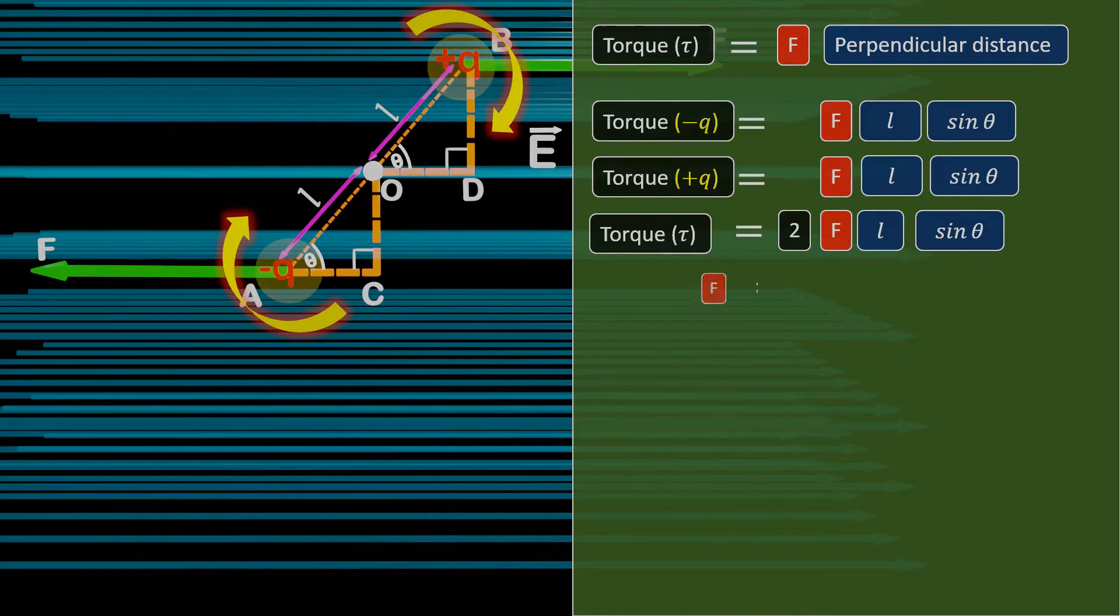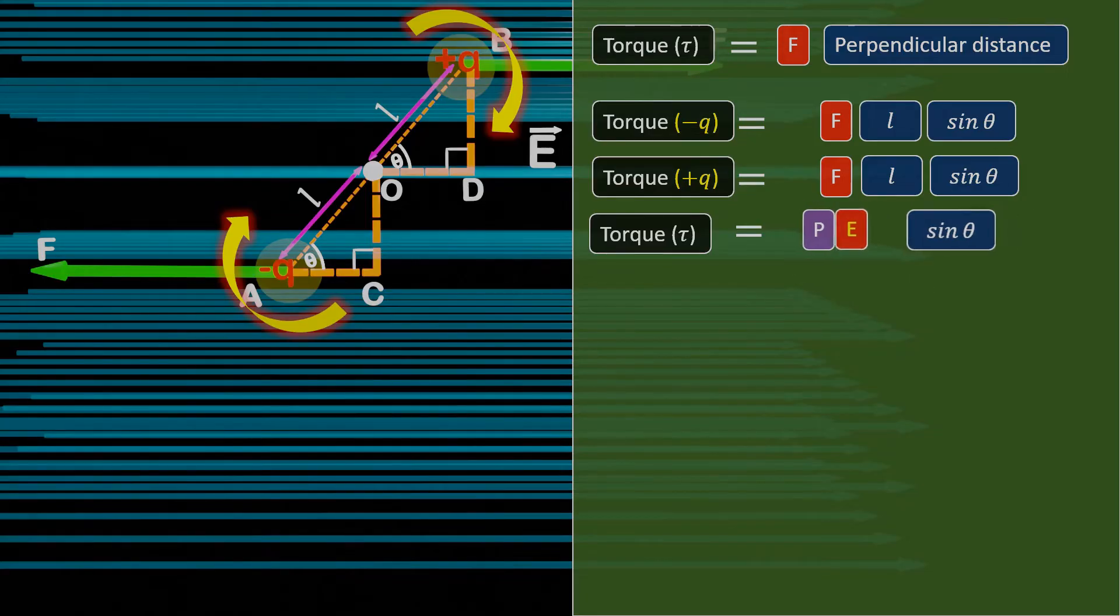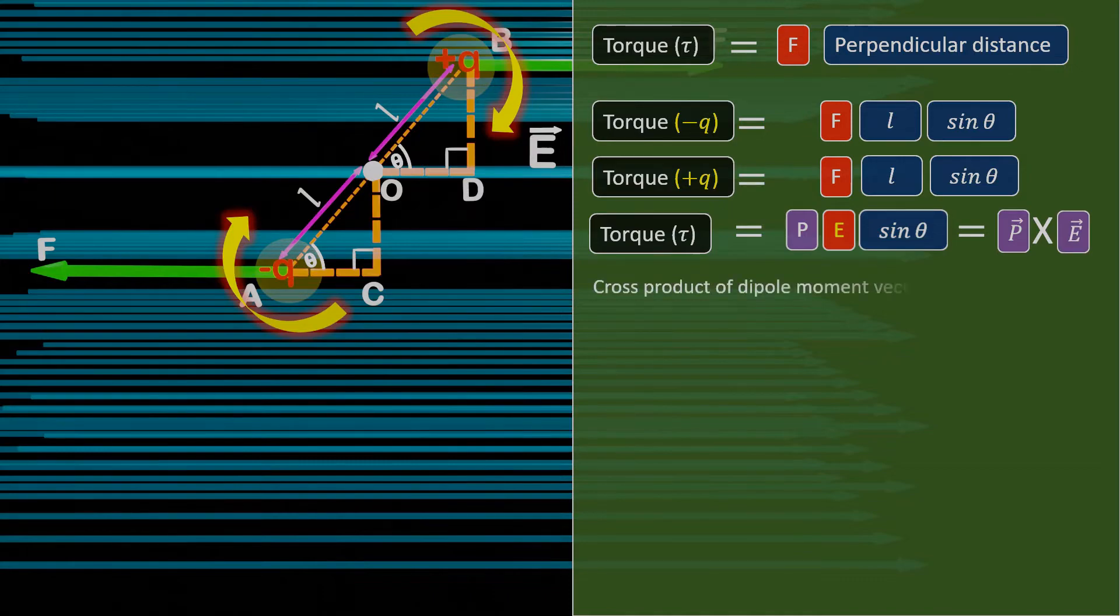We know that the force is equal to QE, where E is the electric field. So we can replace F with QE. In this equation, 2QL represents the effectiveness of the dipole, which we call the dipole moment and denote it by the capital P, which we have already discussed in the last video. Therefore, we obtain the final equation PE sin theta, which is nothing but the cross product of dipole moment vector P and the electric field vector E. Thus, the cross product of dipole moment vector P and the electric field vector E gives us torque.